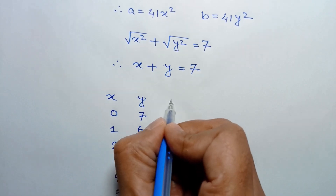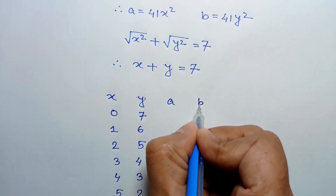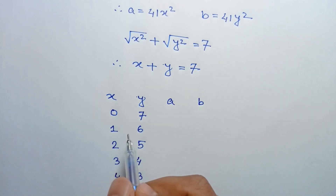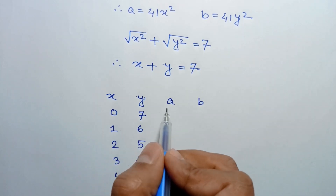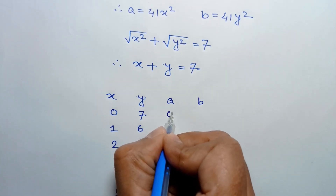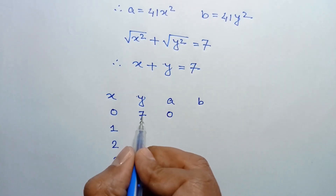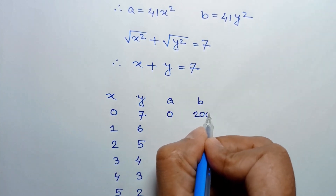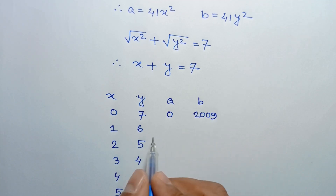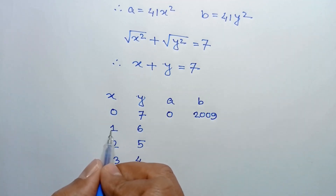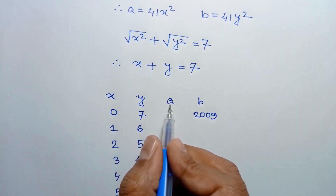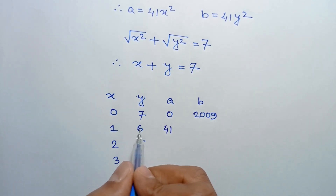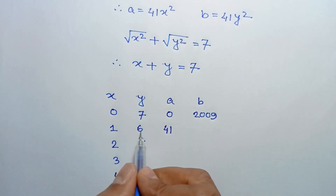For x equals 0 and y equals 7: a equals 41 times 0 squared equals 0, and b equals 41 times 7 squared equals 2009. When x equals 3 and y equals 4: a equals 41 times 3 squared equals 369.